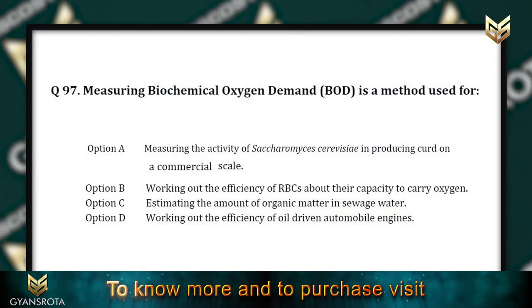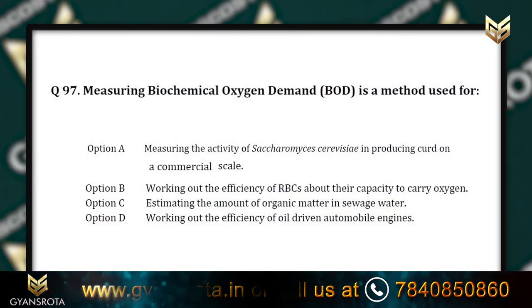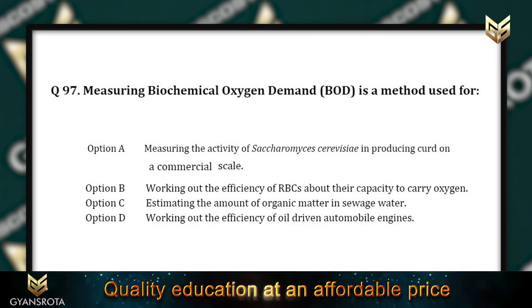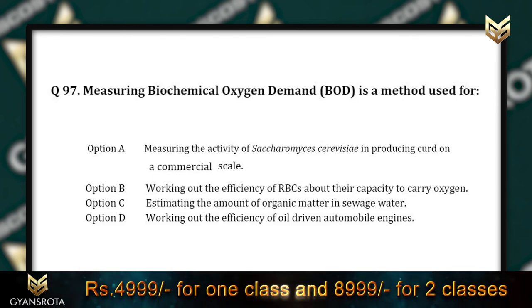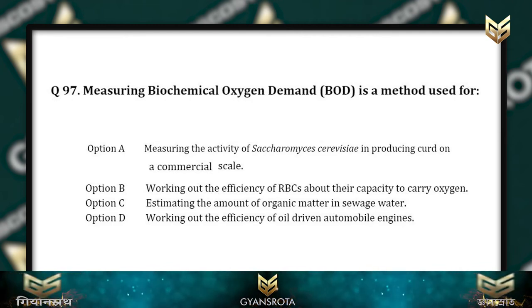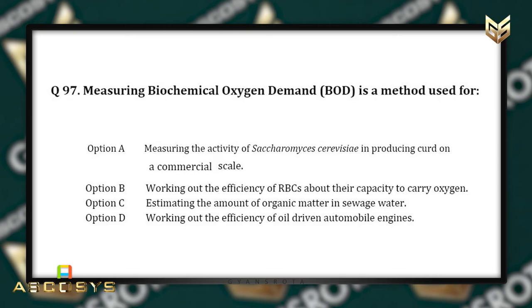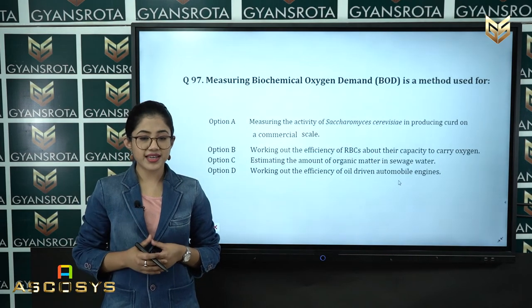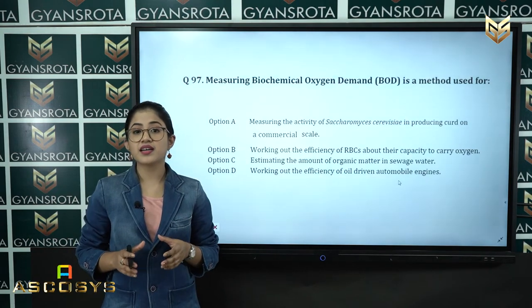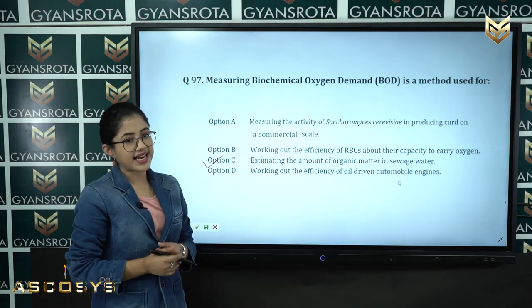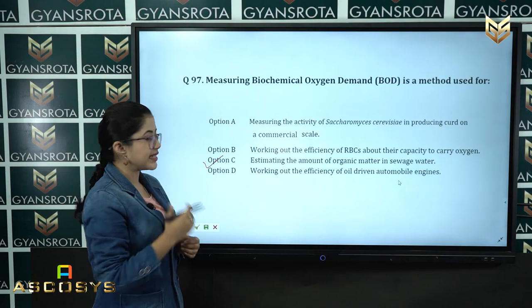Question number 97: Measuring biochemical oxygen demand (BOD) is a method used for — Option A: measuring the activity of Saccharomyces cerevisiae in producing curd. Option B: working out the efficiency of red blood cells in carrying oxygen. Option C: estimating the amount of organic matter in sewage water. Option D: working out the efficiency of oil-driven automobile engines. BOD is used for estimating the amount of organic matter in sewage water, so option C is the correct answer.